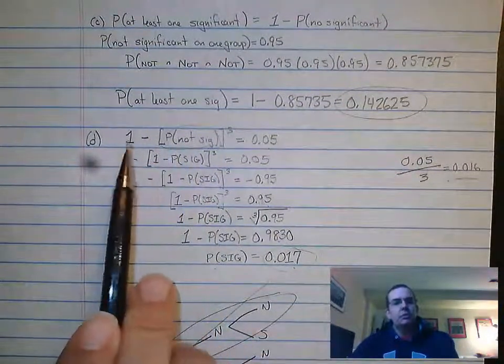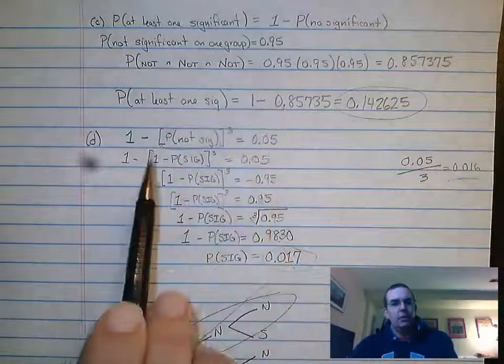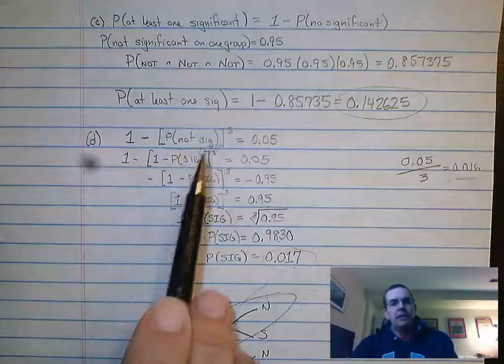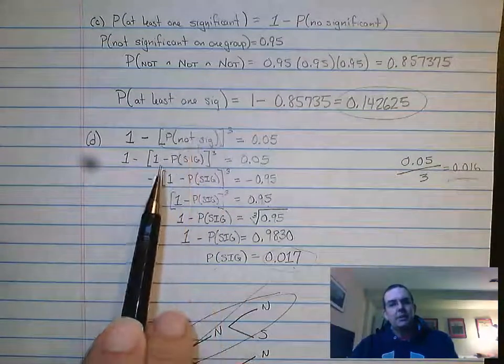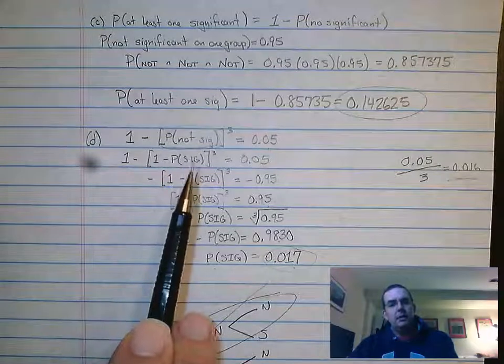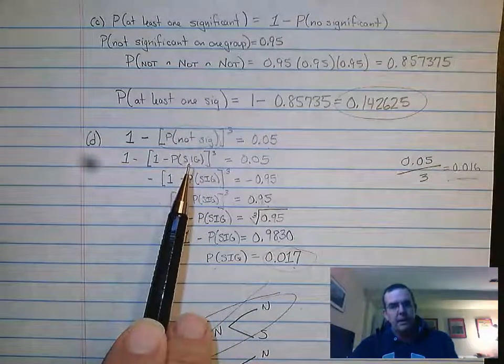The way that I set it up initially was 1 minus, I'll use this same idea here, this formula, 1 minus the probability of not significant cubed. Not significant's probability is the same as 1 minus the probability of it being significant. So this is just this, I just simplified it in there.